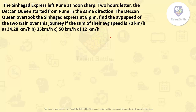The Sinhagad Express left Pune at noon sharp. Two hours later, the Deccan Queen started from Pune in the same direction. The Deccan Queen overtook the Sinhagad Express at 8 p.m. Find the average speed of the two trains over this journey if the sum of their average speeds is 70 km per hour.